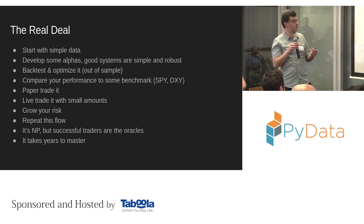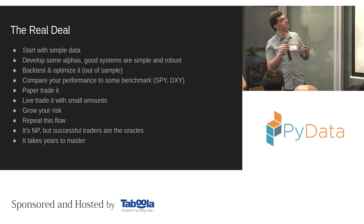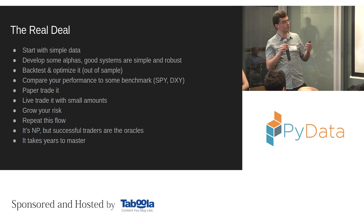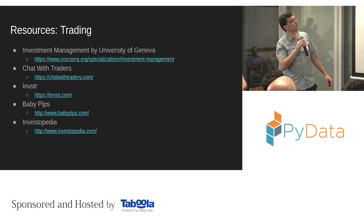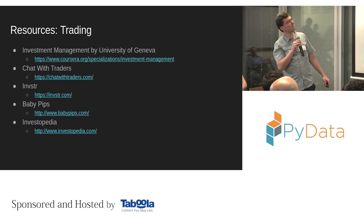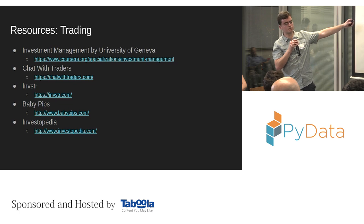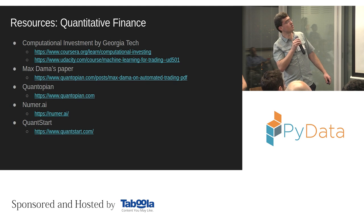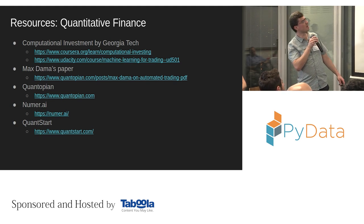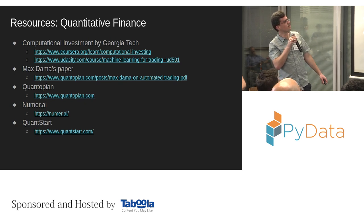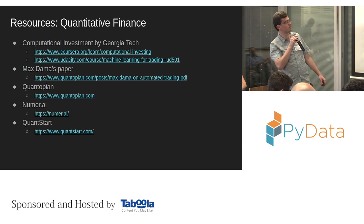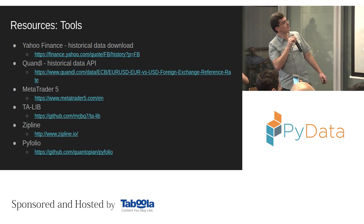In a philosophical aspect, it's a non-deterministic polynomial problem — but we have some oracles: amazing traders. So it's solvable, but it takes years to master. There are a lot of resources out there regarding trading: great stuff on Coursera, some podcasts, and you can even try to trade yourself with an investor mobile app. If you're more serious about Python and the algorithmic aspect, I strongly recommend the Computational Investing course by Georgia Tech's Tucker Balch. Max Damas is basically the best paper on algorithmic trading — an amazing summary.